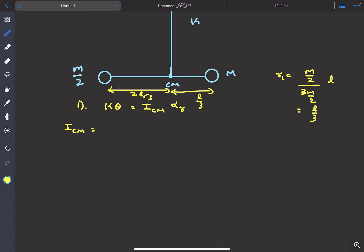So now we can find Icm to be mass times distance from axis squared, plus m/2 times (2L/3)². If you solve it, you'll get the answer to be mL²/3. So now we can find the restoring α to be kθ divided by mL²/3.